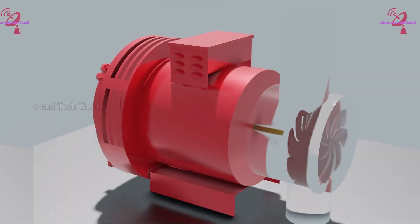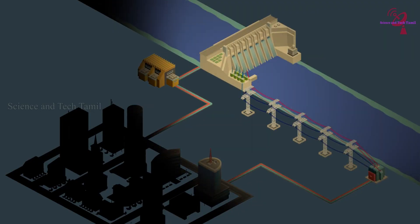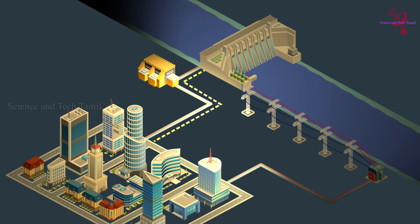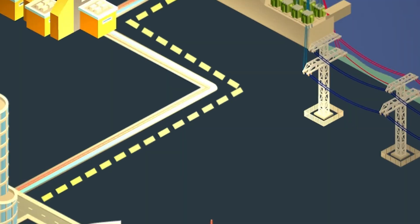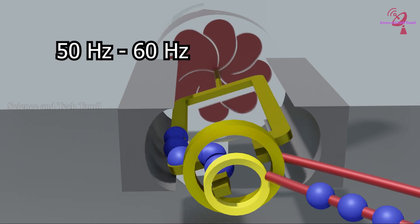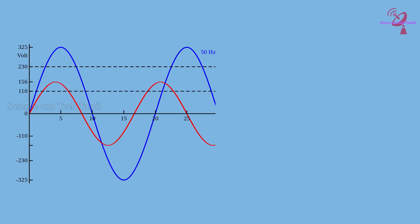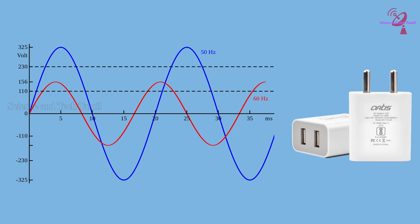To turn up generators, there are other types of external energy also used, such as windmills and tidal energy. Now you may have a question: how many times does the AC generator rotate per second? It rotates 50 to 60 times per second depending on the country. It is represented as 50 Hz to 60 Hz, which is mentioned in AC adapters and devices that run on alternating current.